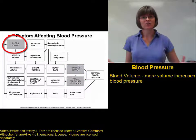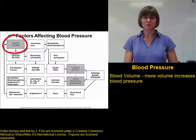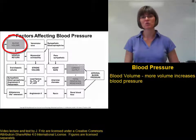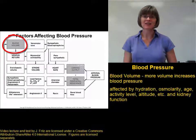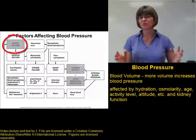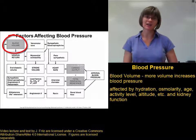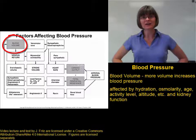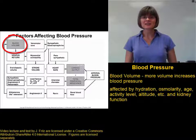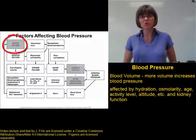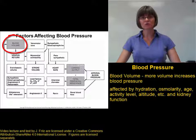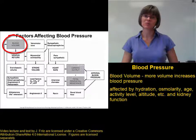We talked about blood volume back in the blood unit. It makes sense that the more blood volume you have, the higher the blood pressure will be — you're pushing more blood into the blood vessels, which creates more pressure. Blood volume is affected by things like your level of hydration, and we talked before about osmolarity and colloid osmotic pressure in the blood. Your blood volume is also affected by kidney function. Your kidneys can either retain more water to increase blood volume, or remove more water in the urine to help bring blood volume down.